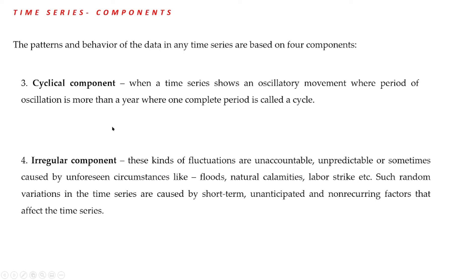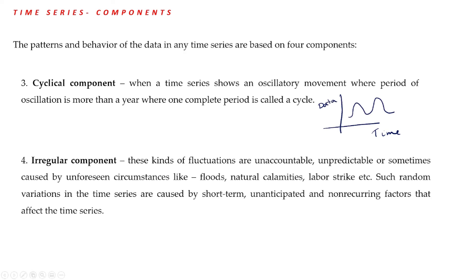The next component is the cyclical component. The time series shows an oscillatory movement where the period of oscillation is more than one year, and one complete period is called a cycle. The time series will show ups and downs — peaks and troughs — similar to a business cycle. This oscillatory movement where the period is more than one year is the cyclical component.